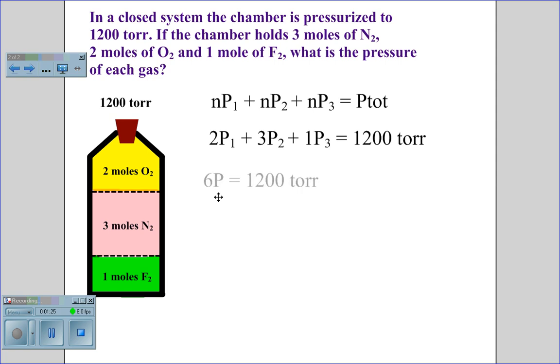Therefore, 6p equals 1200 torr. Completing the math, p equals 1200 torr divided by 6, so the partial pressure of each gas is 200 torr.